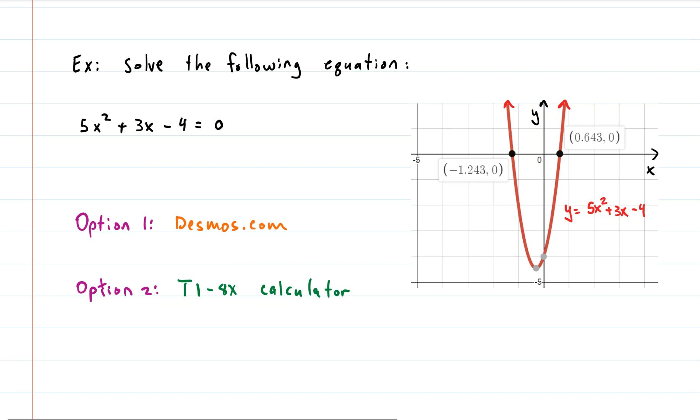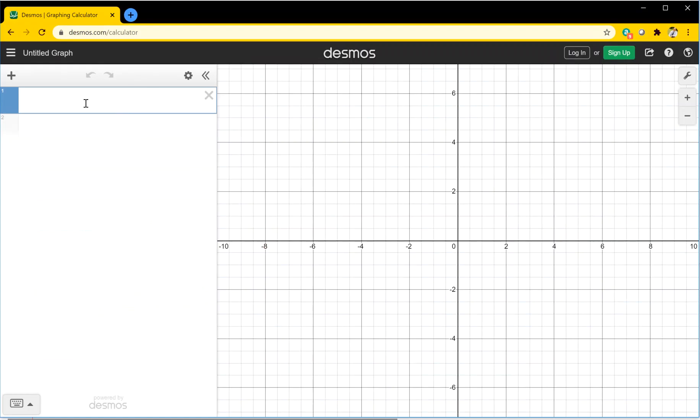So here we go. Let's start. Alright, once we're in Desmos, we can click into this first field and we can just type out our equation. So 5x and a caret and 2, right arrow, plus 3x minus 4.